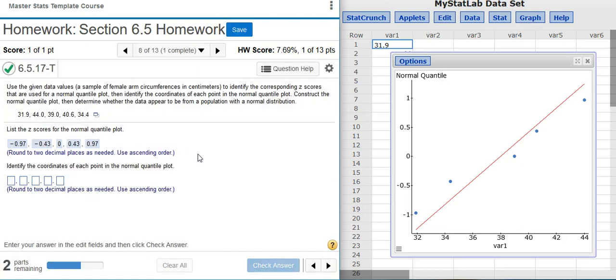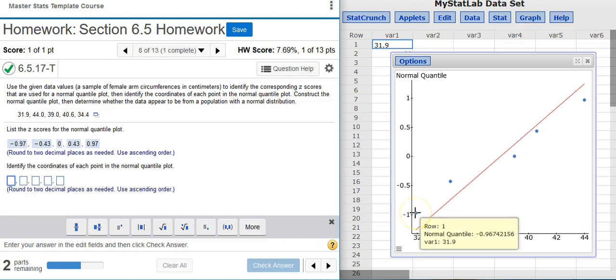Now the second part of our problem asks us to identify the coordinates of each point in the normal quantile plot. Obviously I'm just going to go through the same process that I went through before, only this time in my answer field I'm going to type in ordered pairs. That means I have to put my x and y values in parentheses separated by a comma. So this first one will be 31.9 comma negative 0.96.